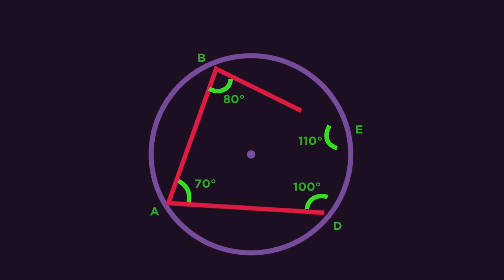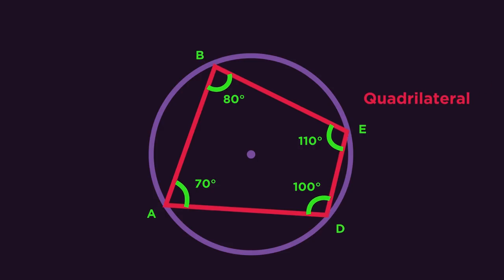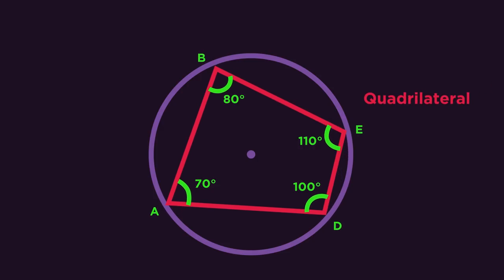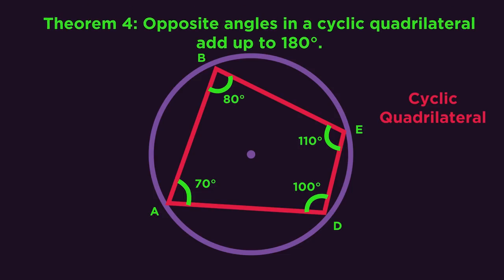It's got four sides. So it must be a quadrilateral. But because it's inside a circle and all four corners or vertices are touching the circumference, we call it a cyclic quadrilateral. I'm sure you all spotted that the opposite angles add up to 180 degrees. So that's our fourth theorem.